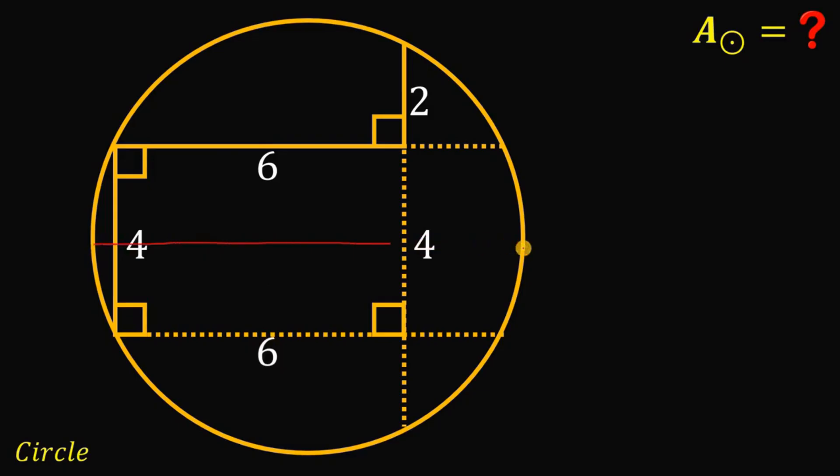Now, if we draw a diameter like this, and if we flip the circle by symmetry, this segment right over here must be equal to 2.